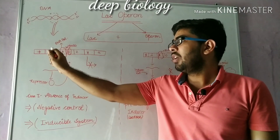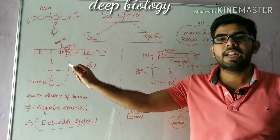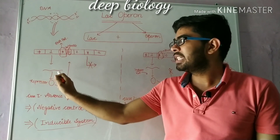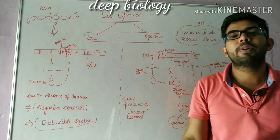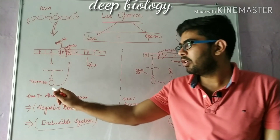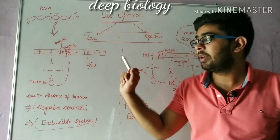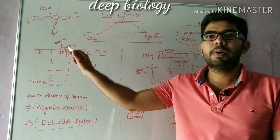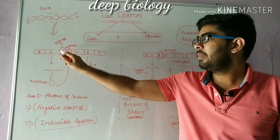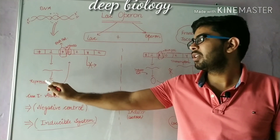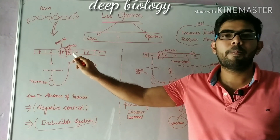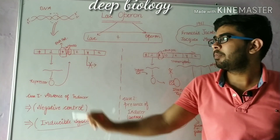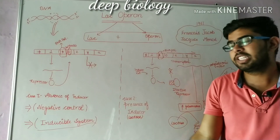This regulatory gene will encode repressor mRNA by the process of transcription. This repressor mRNA then undergoes translation and produces the repressor protein. The promoter region allows RNA polymerase to bind, then this repressor will bind to the operator.